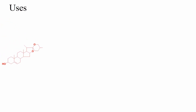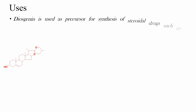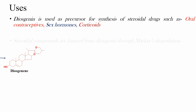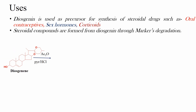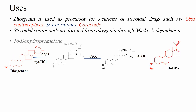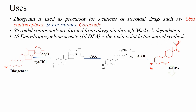Usage of diosgenin: Diosgenin is used as a precursor for the synthesis of steroidal drugs such as oral contraceptives, sex hormones, and corticoids. Steroidal compounds are formed from diosgenin through Marker degradation. 16-DPA is the main intermediate in the steroidal synthesis from diosgenin.